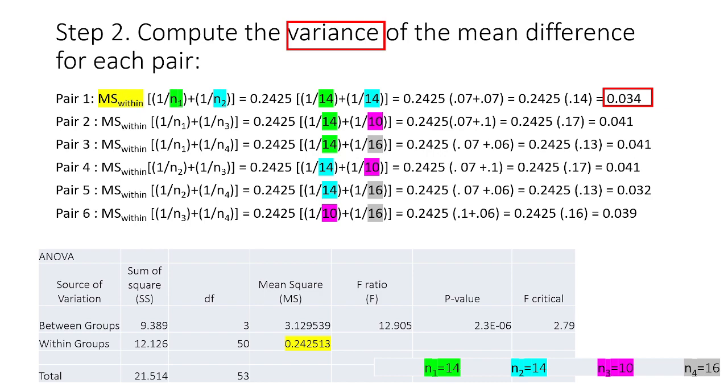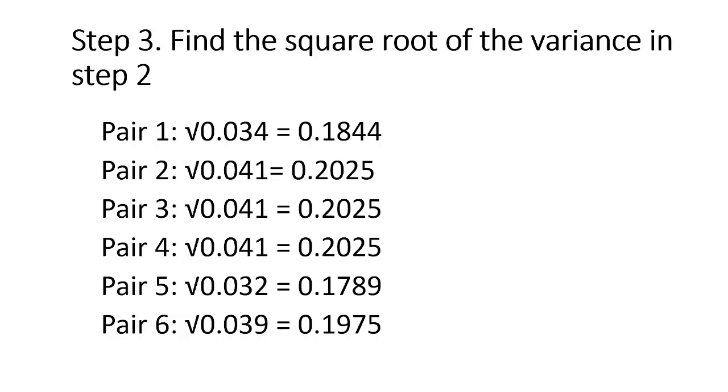Now let us proceed to step number 3. In step 3, we are going to find the square root of the variance which we obtained in step number 2. So just extract the square root of 0.034, that is 0.1844, and extract the square root for the rest of the variance for the other pairs.